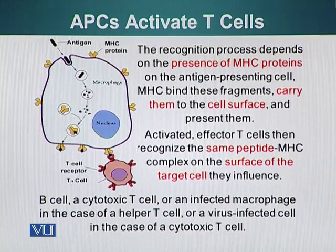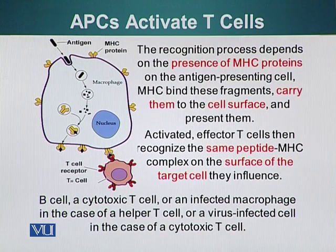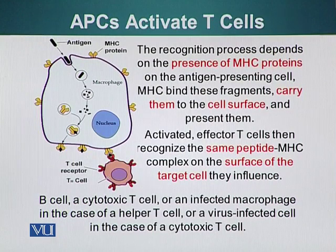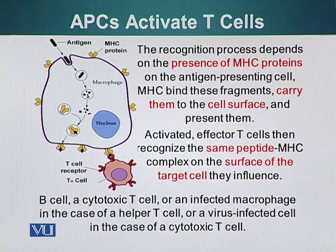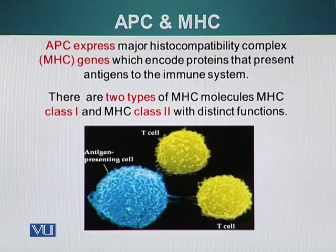The recognition process depends upon the presence of MHC proteins on the surface of the antigen presenting cell. MHC — major histocompatibility complex — proteins bind these fragments, carry them to the surface, and present them. Activated effector T cells then recognize the same peptide fragment on the MHC complex on the surface of target cells, which can be B cells, cytotoxic T cells, infected macrophages, or in the case of cytotoxic T cells, a cell infected with a virus or intracellular parasite.